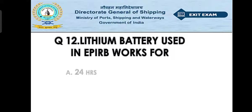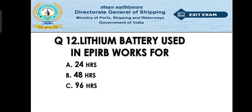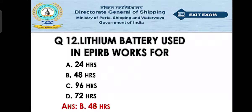Question number twelve: the lithium battery used in an EPIRB works for how long? Option A: 24 hours. Option B: 48 hours. Option C: 96 hours. Option D: 72 hours. The right answer is 48 hours. The lithium battery in the EPIRB, once switched on, can operate for 48 hours — that is, two days.